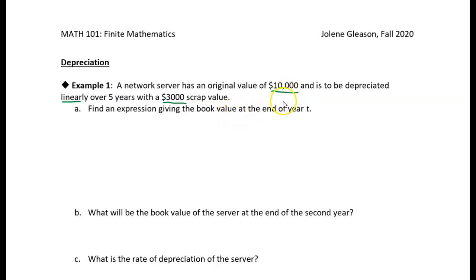So we want to write a linear equation that models this depreciation. And it starts at $10,000. We can just call that T equals zero. At T equals zero, that's the original value. We have a value of $10,000. So we can treat that as the point zero comma 10,000. Now we also know that after five years, we're going to sell it for scrap. When T is equal to five, then the scrap value is $3,000. So essentially we have two points.